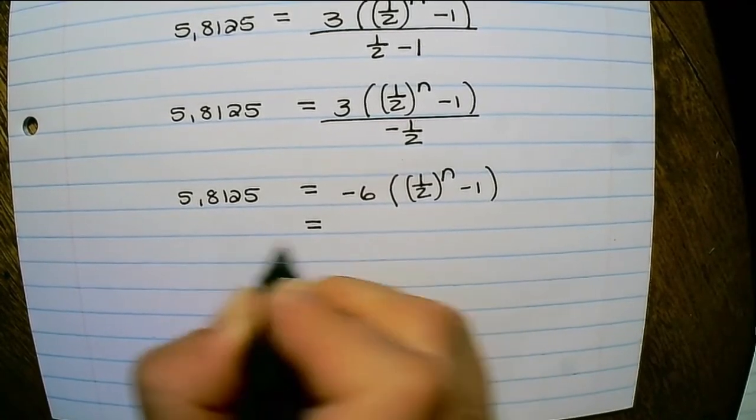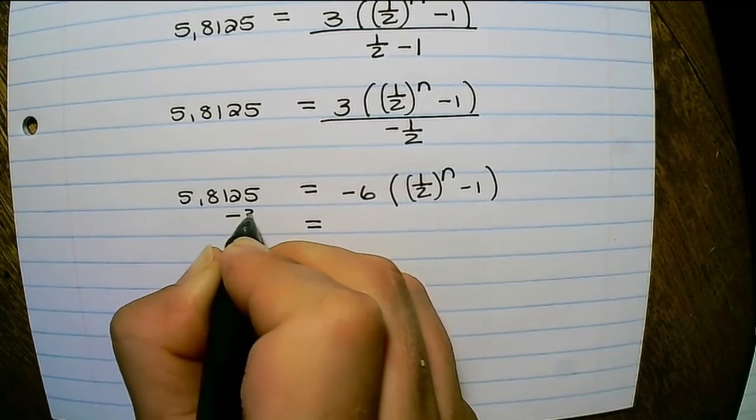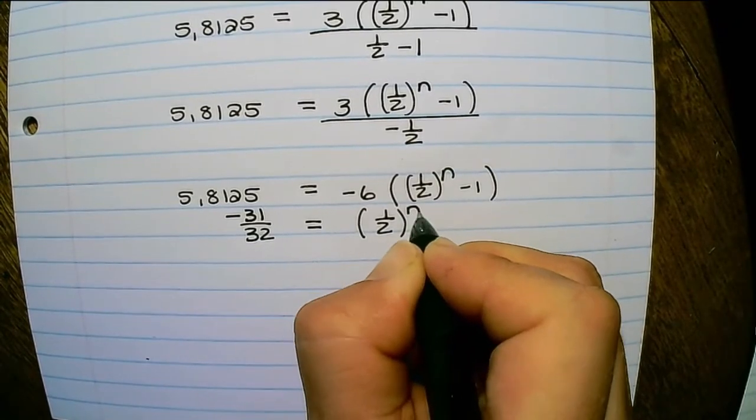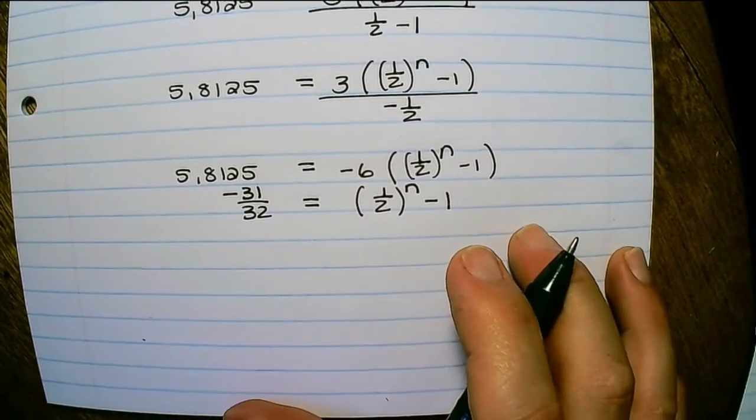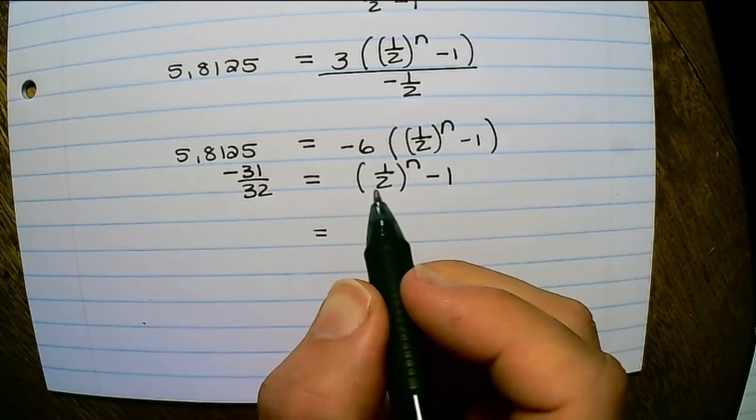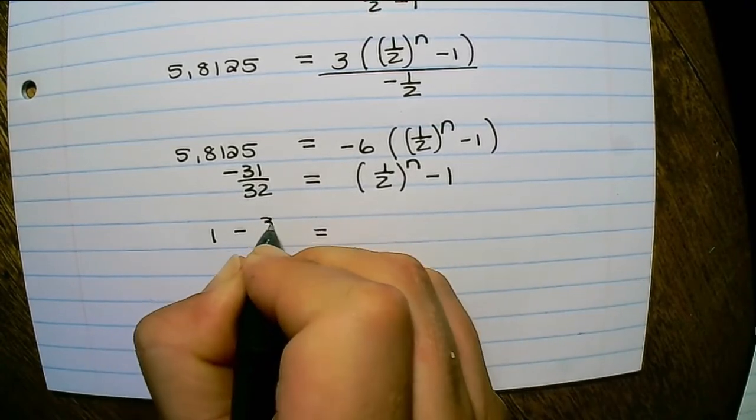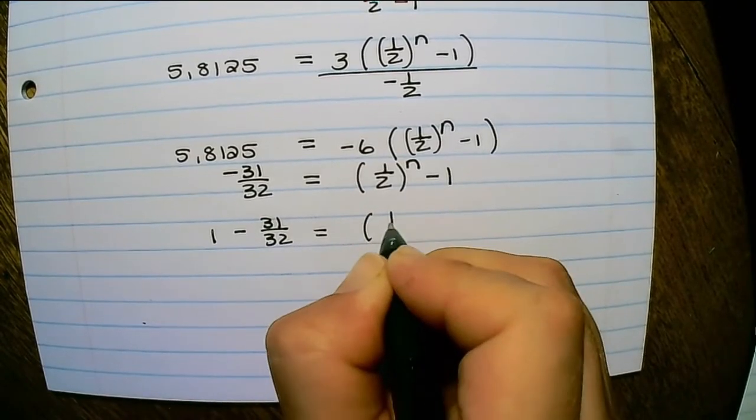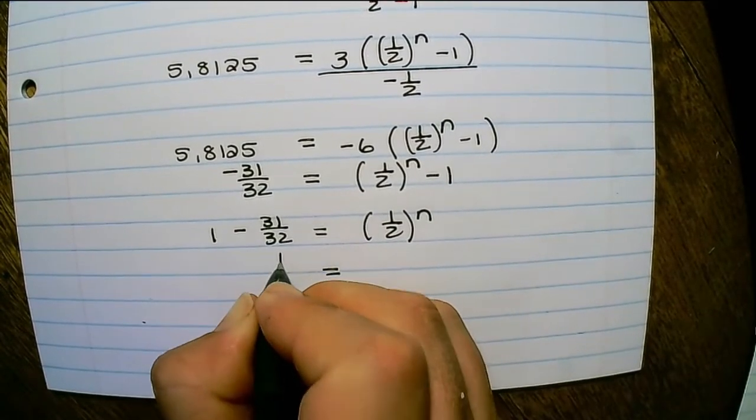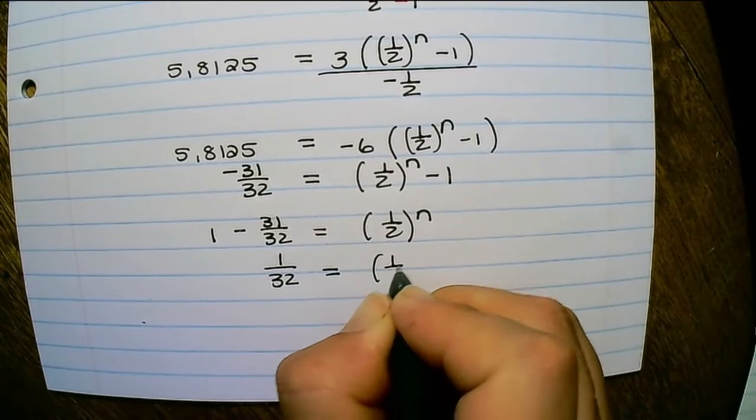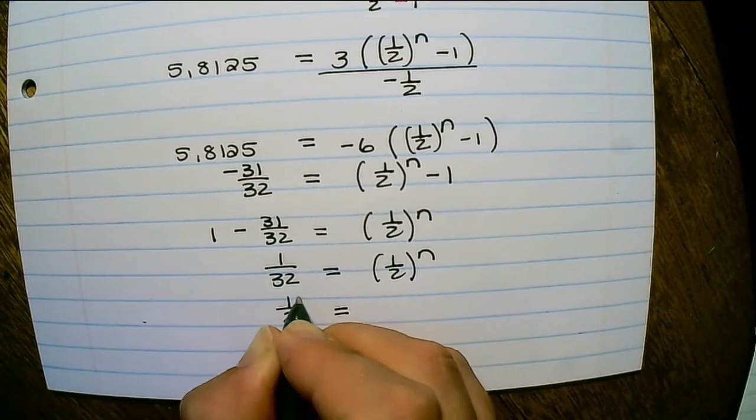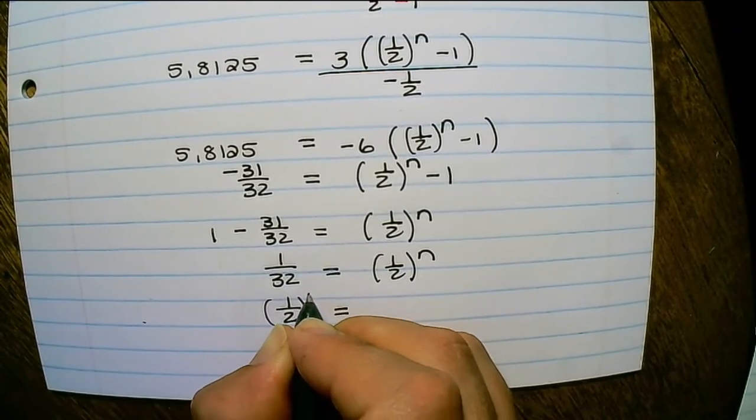Now I divide both sides by 6. And I find that this will be negative 31 over 32. This equals a half raised to the power of n minus 1. Then I transpose the 1. And that will be 1 minus 31 over 32 equals a half raised to the power of n. And if I simplify the left hand side, I have 1 over 32 equals a half raised to the power of n. And 1 over 32 can be written as a half raised to the power of 5.